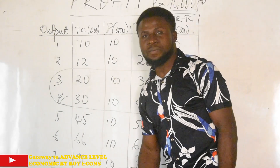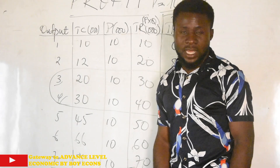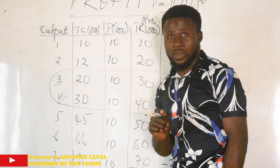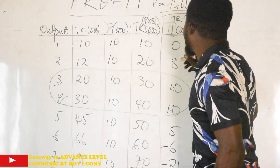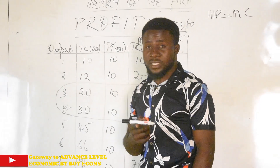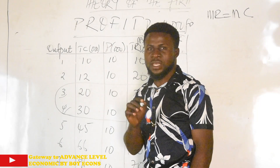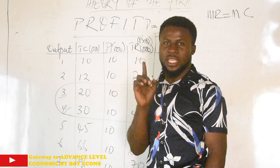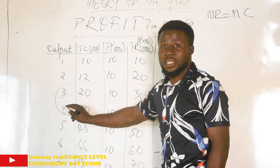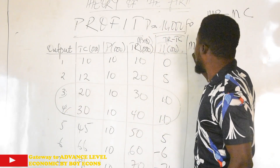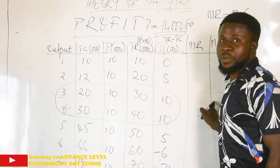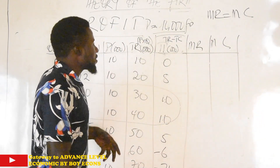We determine the best output level by calculating marginal revenue and marginal cost. The profit-maximizing output level, in principle under the theory of the firm, is that output level where marginal revenue is equal to marginal cost. We will see the reason later. Whenever marginal revenue equals marginal cost, that is your profit-maximizing output level. So since profit is highest at two levels and we cannot choose, we go ahead by calculating MR and MC, and one of them will be equal at a specific output level.